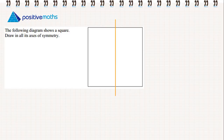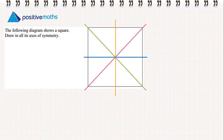So we're going to first start with a vertical line, which divides the shape into two equal halves. Then the horizontal line, which will do the same. One diagonal and another. So this square has four axes of symmetry.